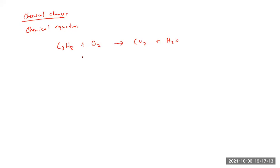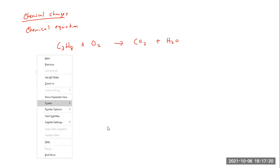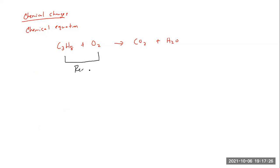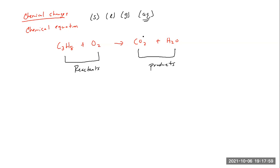There are certain parts to a chemical equation which are important. Everybody on the left-hand side of the arrow are what are referred to as reactants, which are really your starting material in a chemical reaction. Everybody on the right-hand side of the arrow are what are referred to as products, which are obviously the things that are produced as a result of a chemical reaction. Other things sometimes included next to formulas are the states like solid, liquid, gas, or aqueous. AQ stands for aqueous.